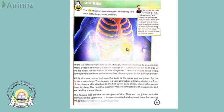The ribs keep very important parts of the body safe, such as the lungs, heart, and liver. The two most important organs in the human body are the brain and the heart — if they stop functioning, a person dies. Allah Almighty has created bones to protect our main organs: the skull protects the brain, and if you put your hand on your chest, those hard bones you feel are called the rib cage.